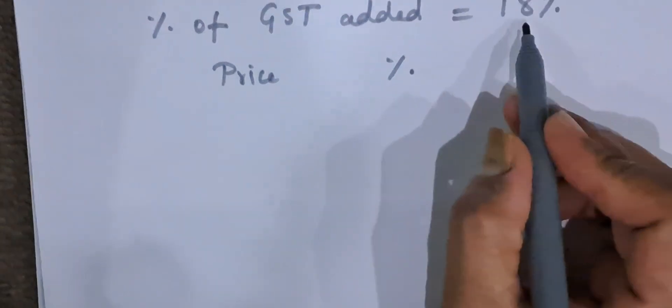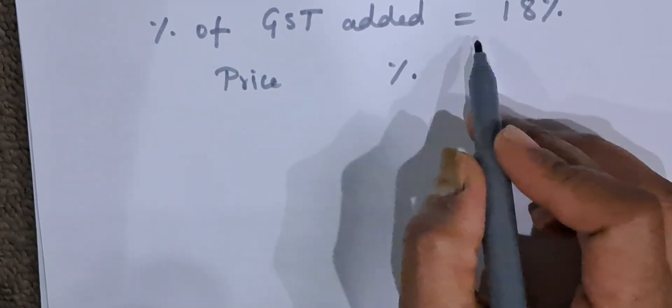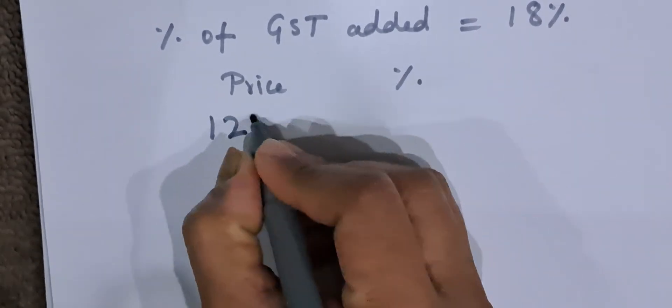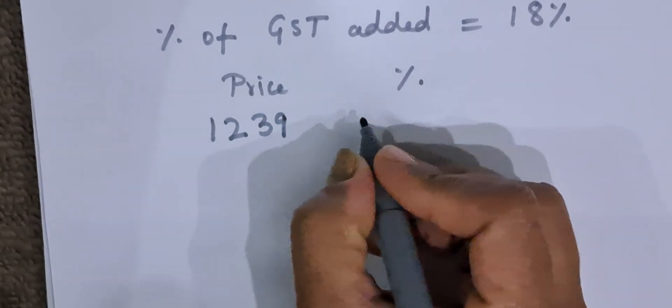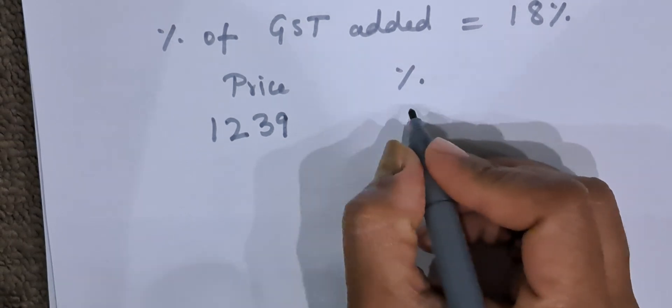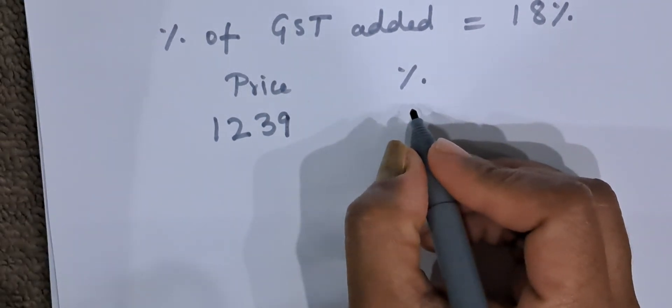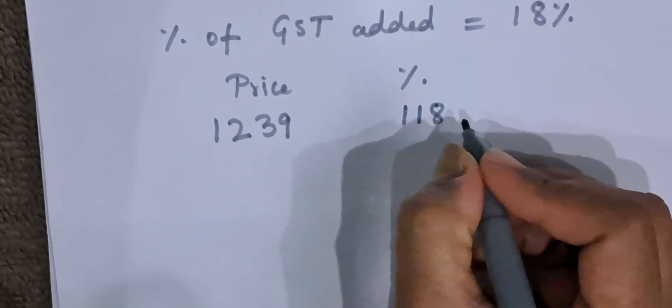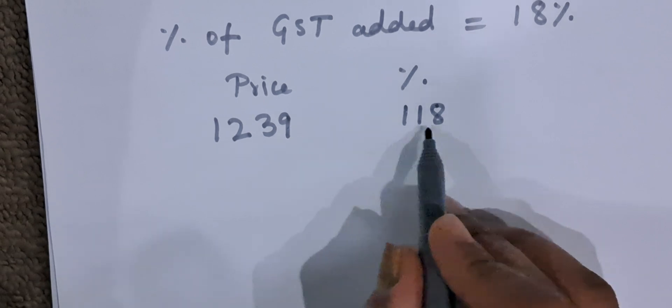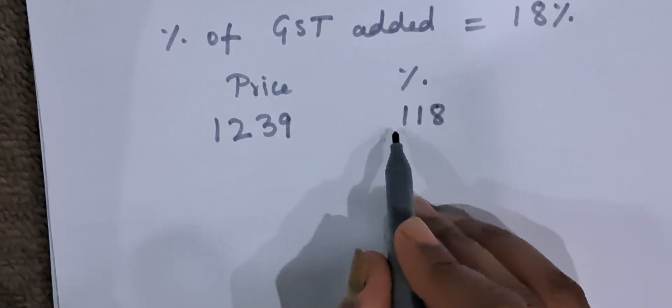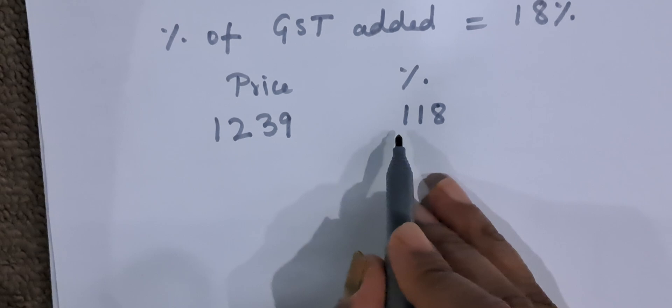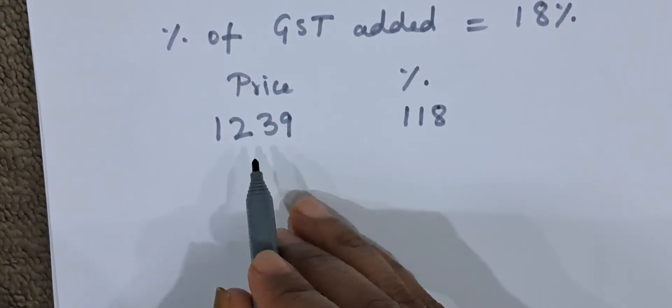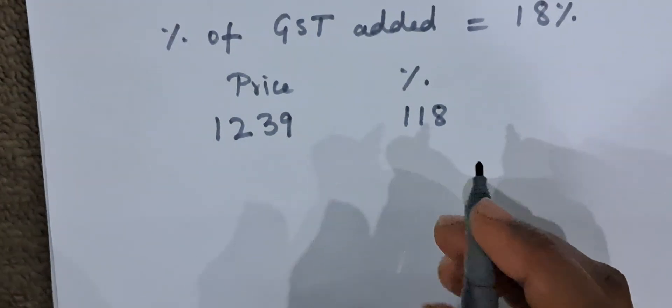Now when 18% GST was included, what is the price? 1239 rupees when the GST was included. Let us take the price of the article to be 100% plus 18%, it becomes 118%. 100% is the price of the article and 18% is the GST. So 100 plus 18 is 118. So 118 percentage is 1239. Now they are asking us without the GST.